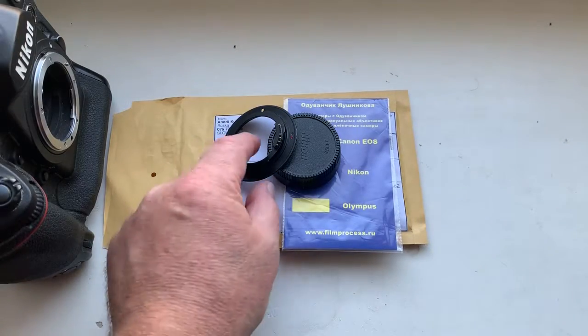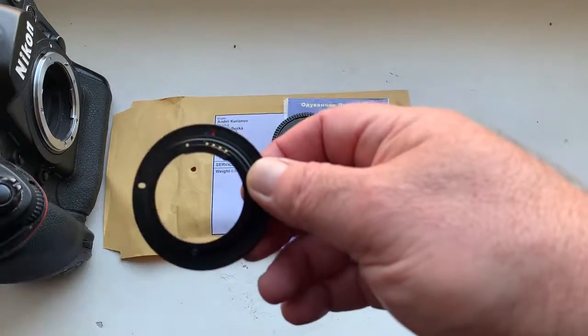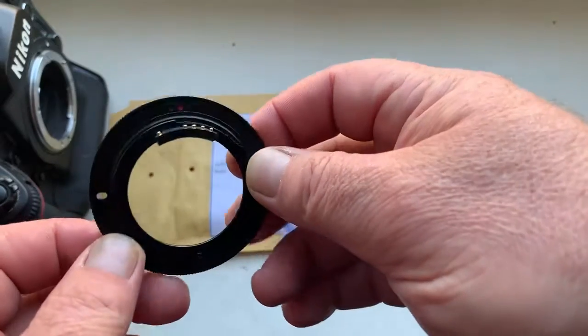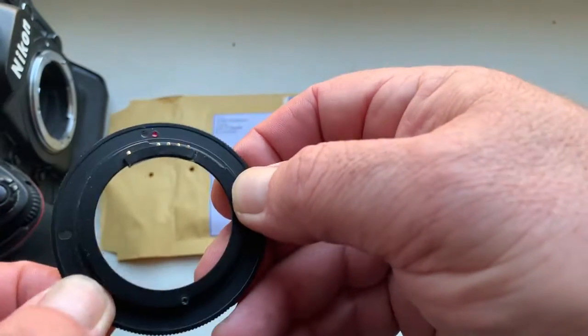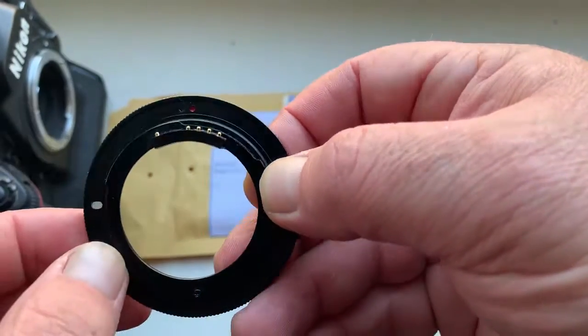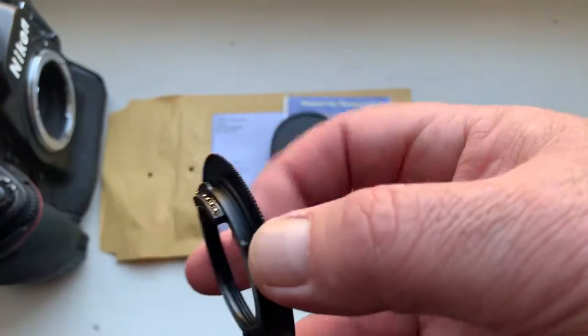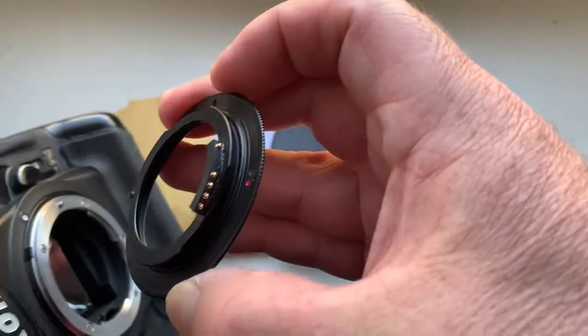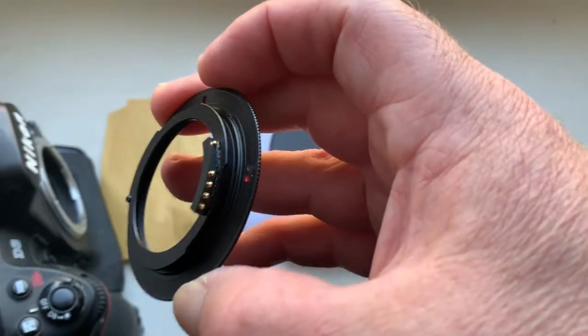Hello Perico, this video is about your adapter M42 to Nikon with programmable dandelion chip. Look, this is your adapter with chip. Now I check it in my camera. Look how to install and reinstall.